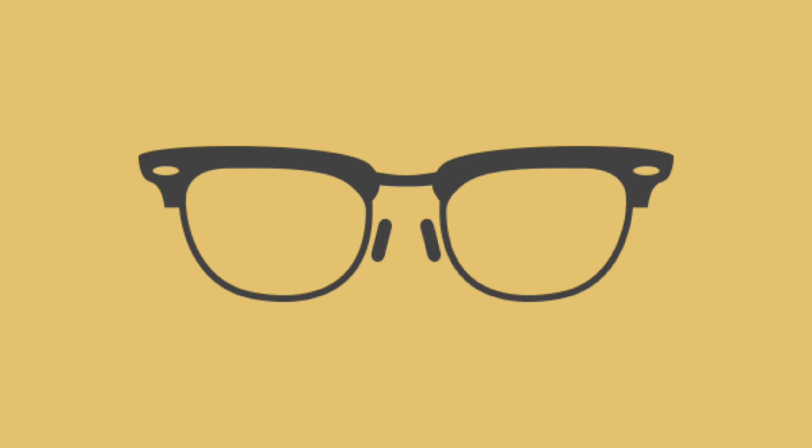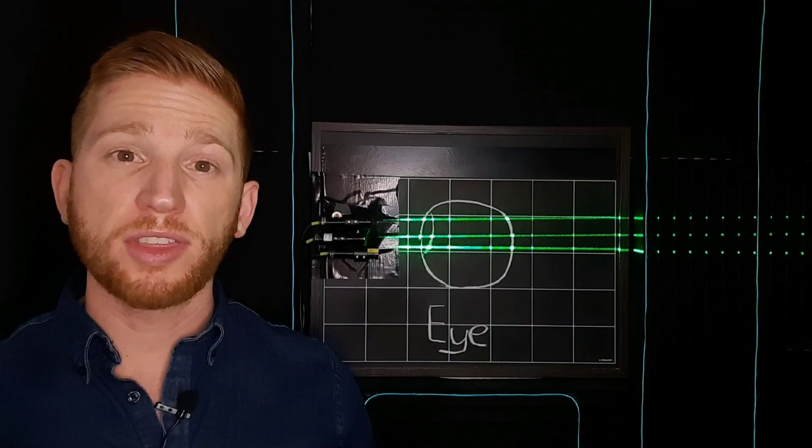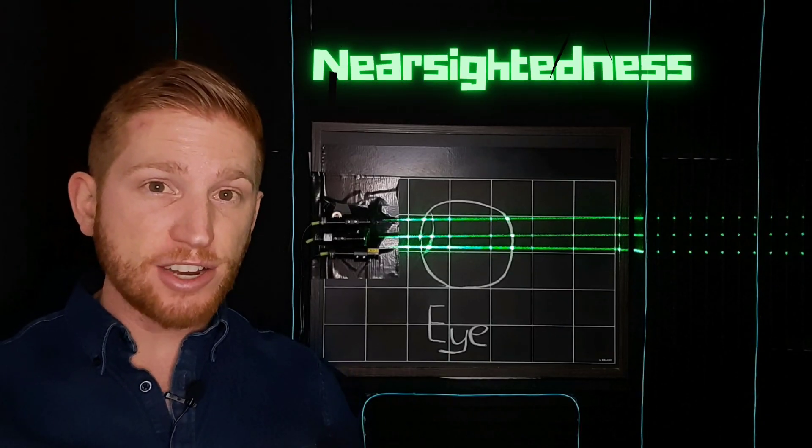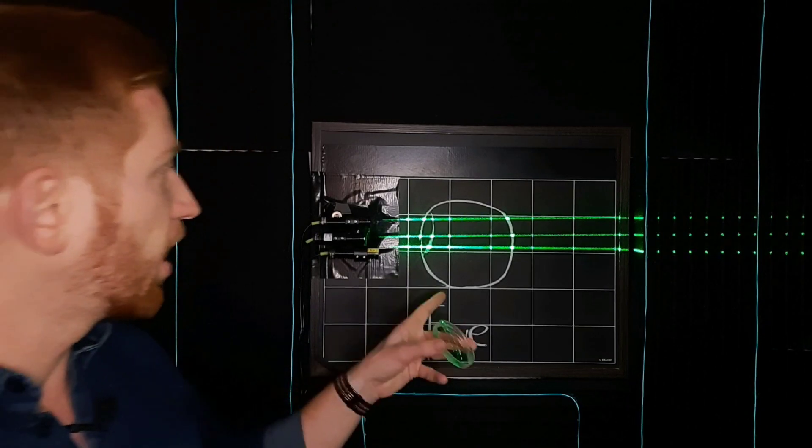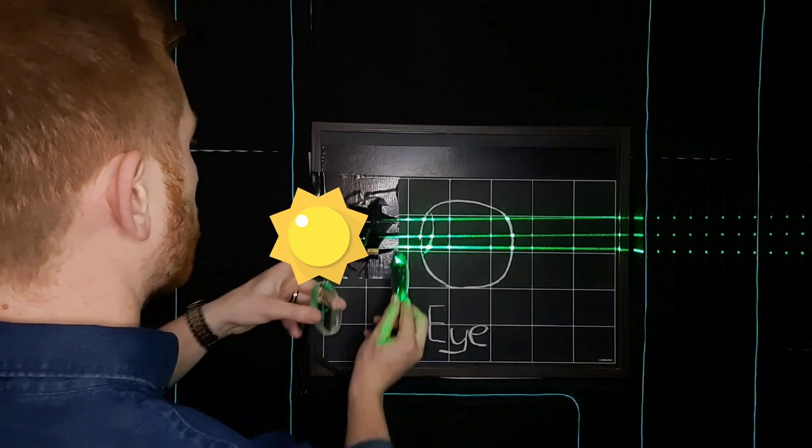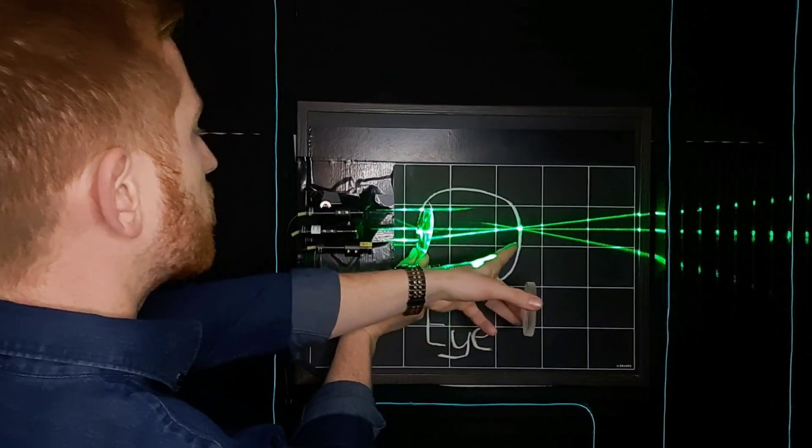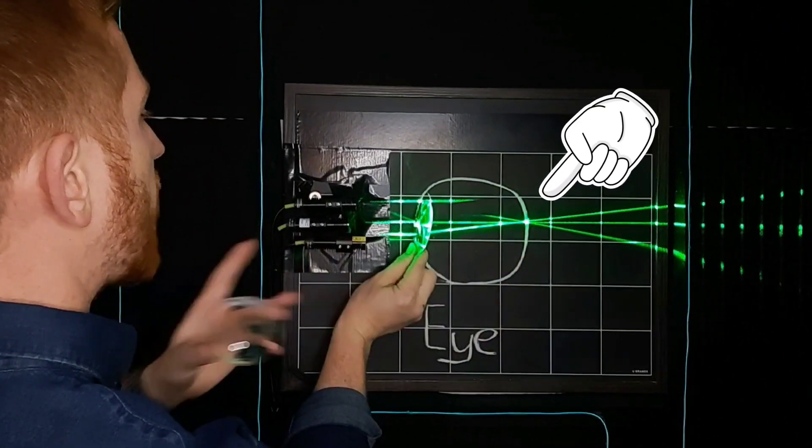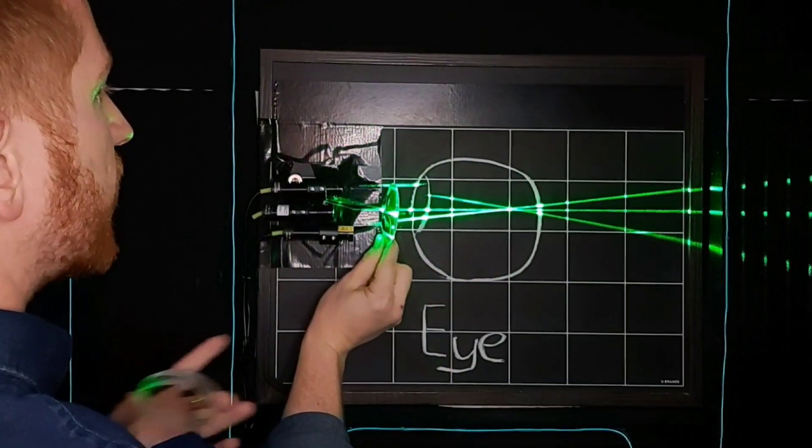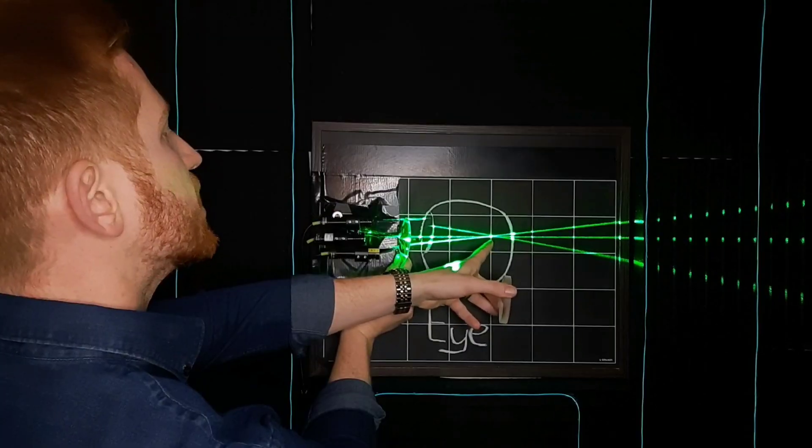Single vision lenses can correct for a few different types of errors in your eyes. More than 40% of people are nearsighted, meaning that when your eye is looking at something very far away, it takes in that light and instead of focusing it onto your retina on the back of your eye like it's supposed to, it's focusing the light too soon, too near.